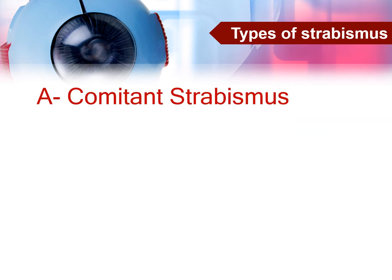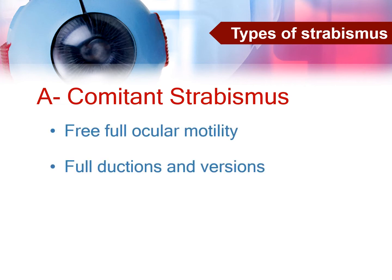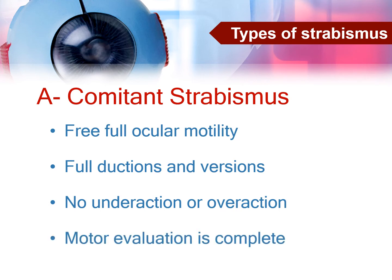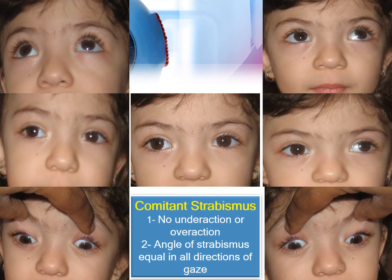In comitant strabismus, we can document the free motility in different ways. One can say the ductions and versions are full, that there is no under action or over action of any of the extraocular muscles. We can see here in this young girl with exotropia — there is no under action or over action of the extraocular muscles, and the angle of the exotropia remains almost constant in all directions of gaze.